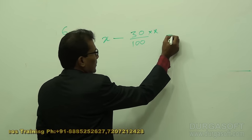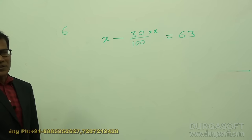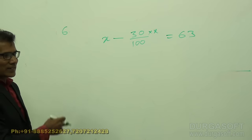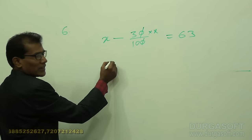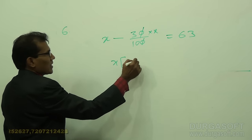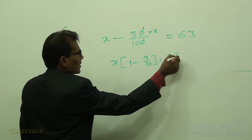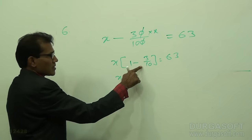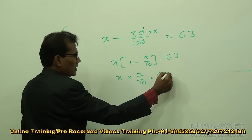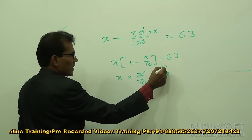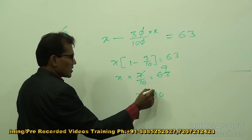The result is 63. So x minus 30 percent of x equals 63. Cancel the zeros and take x common. We get x times (1 minus 3/10) equals 63, which is x times 7/10 equals 63. Cancelling 7, we get x equals 10 times 9, which is 90.